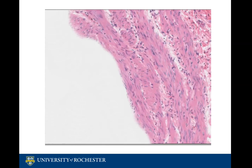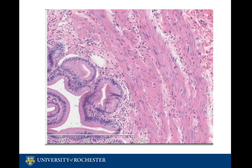Within the muscular layer one can also identify Rokitansky-Aschoff sinuses, an interesting characteristic specific to the gallbladder. These are outpouchings of the mucosal layer within the muscular wall and sometimes subserosal tissue. Also termed entrapped epithelial crypts, these sinuses are not abnormal but can be associated with cholecystitis, inflammation of the gallbladder.